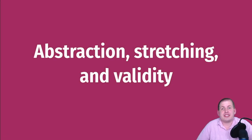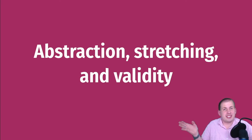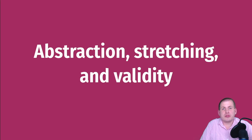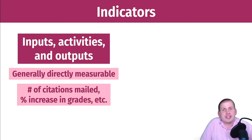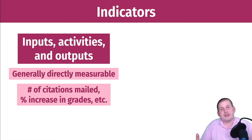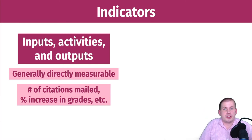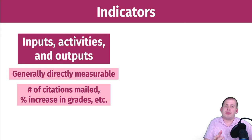To start, we're going to talk about this idea of abstraction and conceptual stretching, because as mentioned in the introduction, outcomes are very difficult to measure. In programs you have all sorts of different indicators or variables - things like inputs, activities, and outputs. In general, these things are directly measurable: you can count the number of things your program does, the number of kids it serves, the number of waivers it hands out, the number of citations it mails - these things are generally very easy to count.